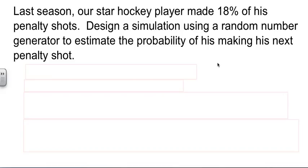Now, let's look at a second case. We have our star hockey player who made 18% of his penalty shots. Our job is to design a simulation using a random number generator to estimate the probability that he'll make the next shot. We could actually do this, have them take 100 shots. But what would happen is the skater would get tired, the goalie would get tired. Each one would pick up on habits and tendencies from the other, and it would skew our data and change this value. Fortunately, a random number generator doesn't get tired, so we can work with that.